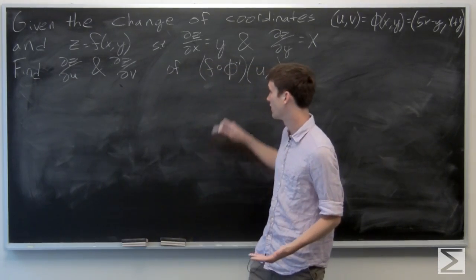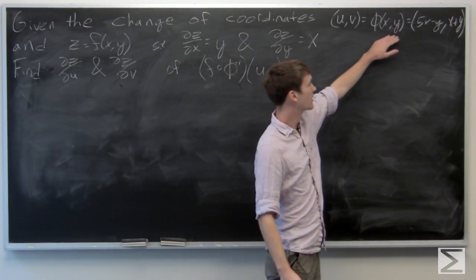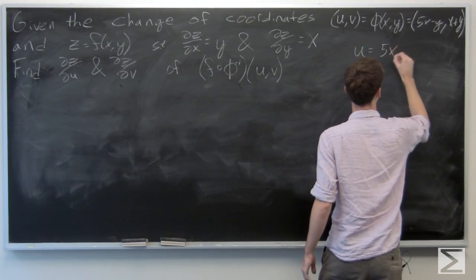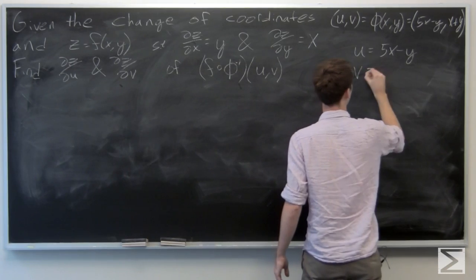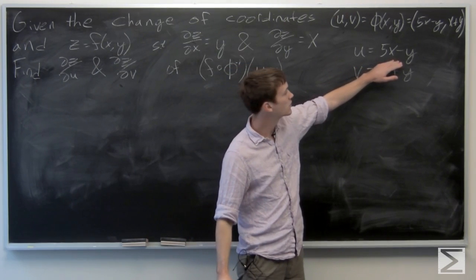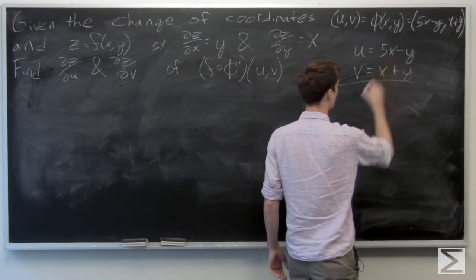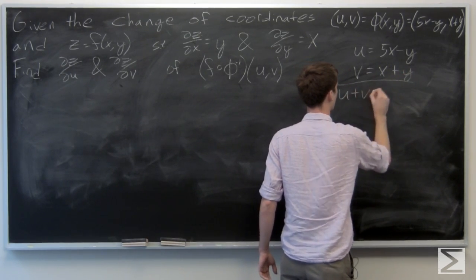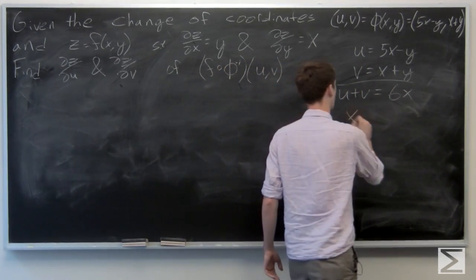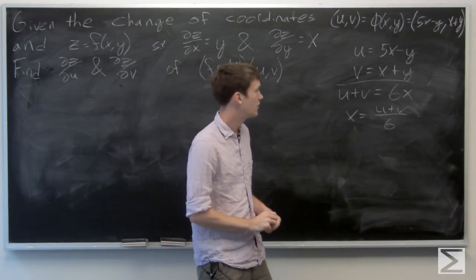First, we're going to want to find our phi inverse. Given our function phi of x, y, we'll let u equal 5x minus y and v equal x plus y. We can add these equations together — the y's cancel, and we get u plus v equals 6x, so x equals (u plus v) over 6.